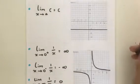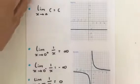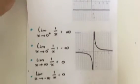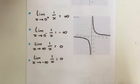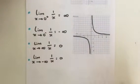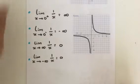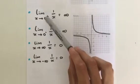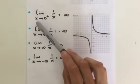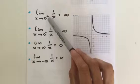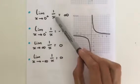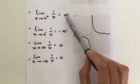Let's move on to the next example with our reciprocal function, one over x. First, the limit as x approaches zero from the right — positive means from the right — of one over x is equal to infinity.